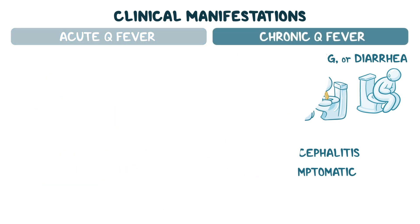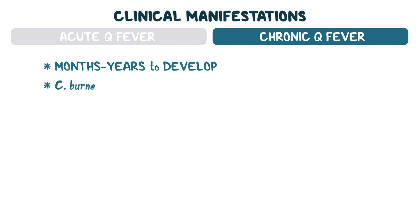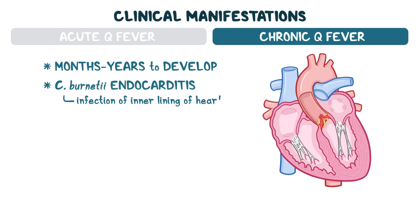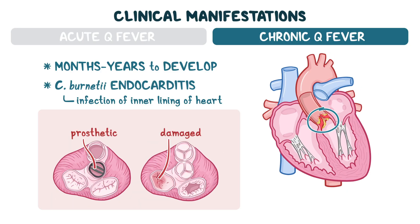On the other hand, chronic Q fever takes months to years to develop and is most classically associated with C. burnetii endocarditis — an infection of the inner lining of the heart that often involves the heart valves. People with prosthetic or damaged valves are at especially high risk.